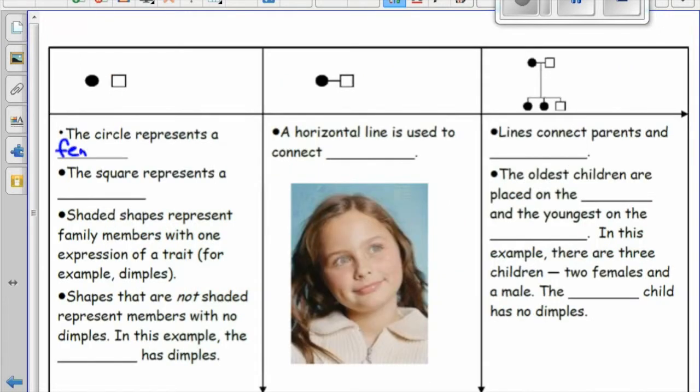The circle represents a female. The square represents a male. Shaded shapes represent family members with one expression of a trait. For example, dimples. Shapes that are not shaded represent members with no dimples. In this example, the female has dimples.